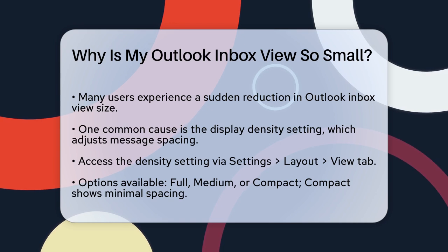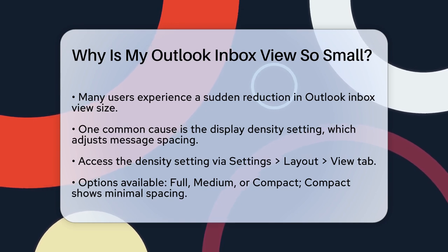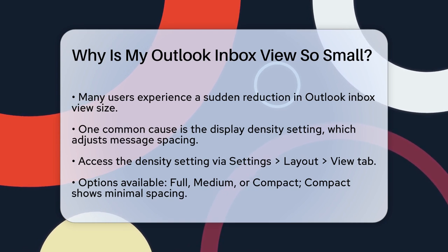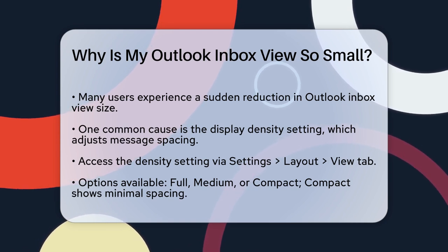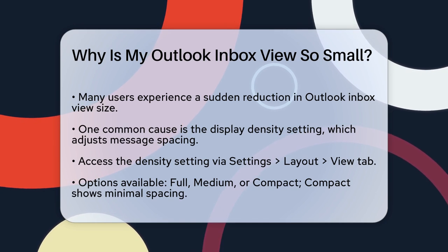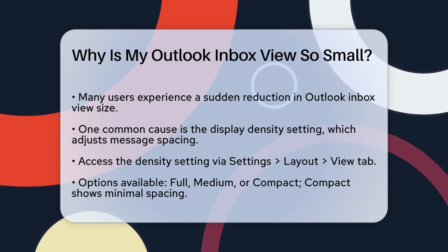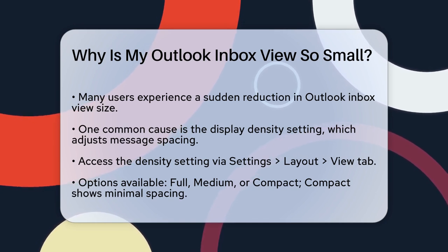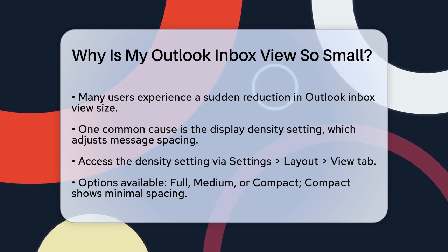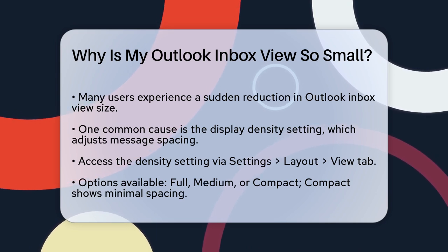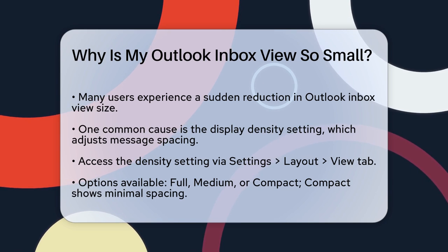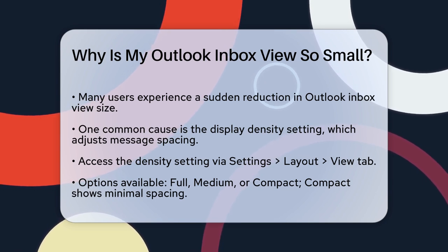One common reason for a small Inbox View is the display density setting. In Outlook, you can adjust the spacing between messages in your message list. To do this, go to the Settings menu, then select Layout. Under the View tab, you can choose the Density option. Here you can select Full, Medium, or Compact. The Compact option shows only message preview text with minimal spacing, which can make your Inbox View appear smaller.